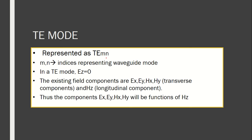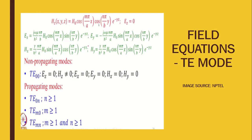Moving to the TE mode, it is again represented as TE_MN, where M and N represent the modes. For a TE mode, the EZ component is zero, and all the field components EX, EY, HX, and HY are functions of HZ — the H component in the direction of propagation. These are the four equations: EX, HX, EY, and HY, all functions of HZ.